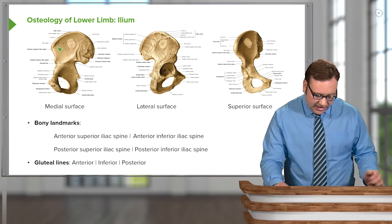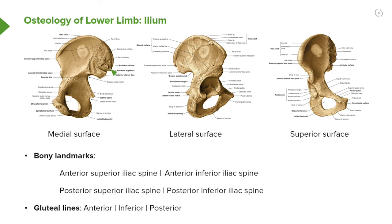More posteriorly, we find the posterior superior iliac spine, and below it the posterior inferior iliac spine. We can see these on the medial surface as well as the lateral surface. Here's the anterior superior iliac spine, anterior inferior iliac spine, and here we have our two posterior iliac spines. We can also make them out on the superior view.